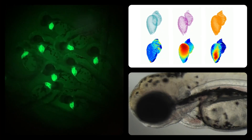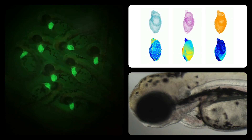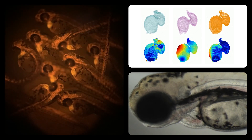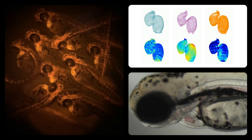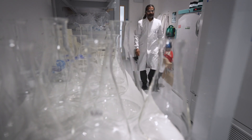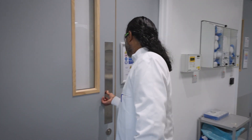We're particularly interested in how the environment around the cells influences that process. Within the heart, for example, there might be different extracellular environments made up by the extracellular matrix that are different in different regions of this simple heart tube, allowing it to fine-tune the different shapes it's going to make as it undergoes morphogenesis.